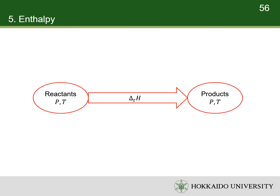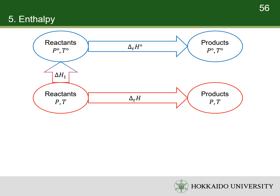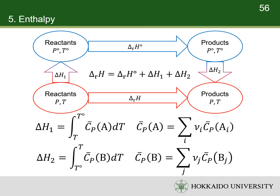To calculate the enthalpy of a reaction in states other than the standard states, we can create a three-step process. First, the reactants are converted to their standard states. Then the reaction takes place, with the enthalpy change equal to the standard enthalpy of reaction. Finally, the products are converted to their original states. Since enthalpy is a state function, the enthalpy changes of the two pathways are equal. The enthalpy difference between the original states and the standard states can be calculated using the integral of heat capacity at constant pressure with respect to temperature. The heat capacity is the sum of heat capacities of all the reactants or products multiplied by their stoichiometric numbers. Thus, we can calculate the enthalpy of the reaction in any condition.